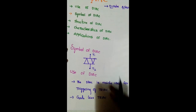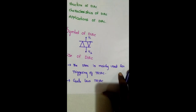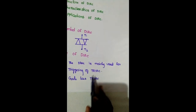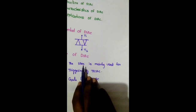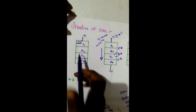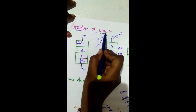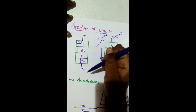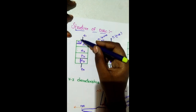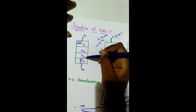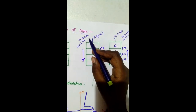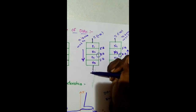It is a bi-directional device. The DIAC is mainly used for triggering of TRIAC and it is also known as gateless TRIAC. The DIAC has two terminals T1 and T2, and five layers: N1, P1, N2, P2, and N3.